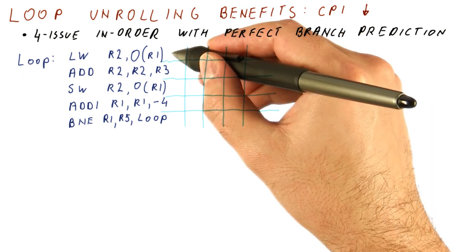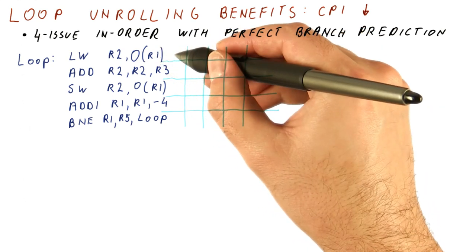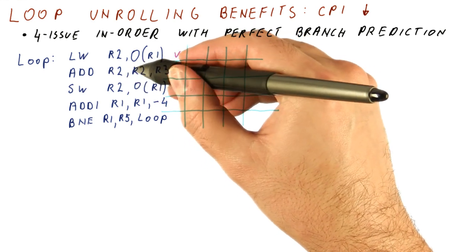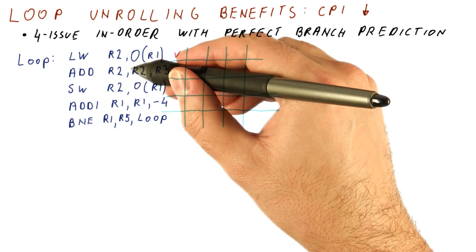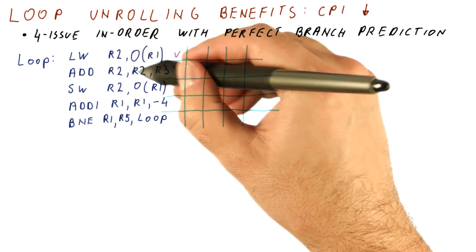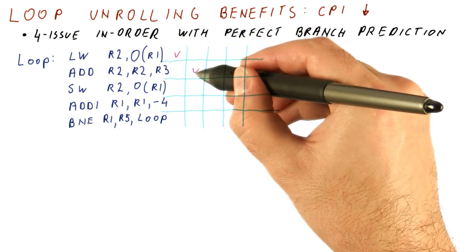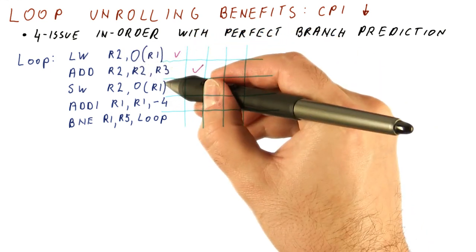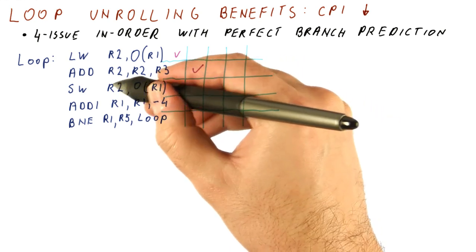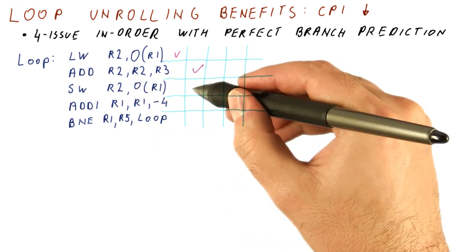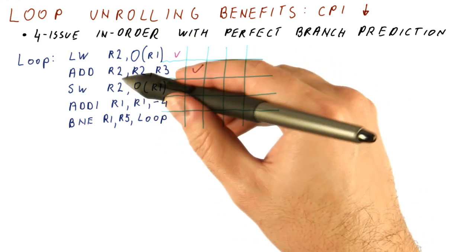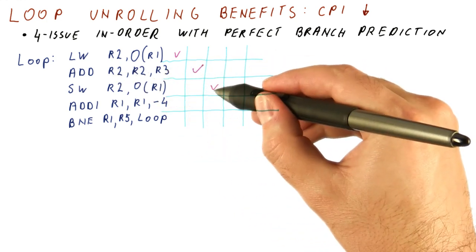In the very first cycle, we will try to do this load. And then we will try to see whether we can execute the next instruction in order in the same cycle, but we cannot because it depends on the load. So this instruction has to be done here. Now we will look at the next instruction and try to execute it in order in the same cycle, but we cannot because it depends on R2 again. So we move here.